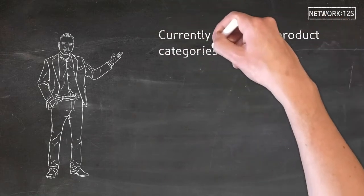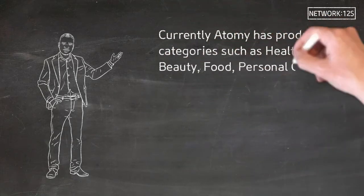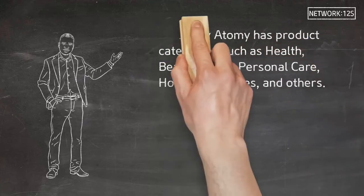Currently Atomy has product categories such as health, beauty, food, personal care, home appliances, and others.